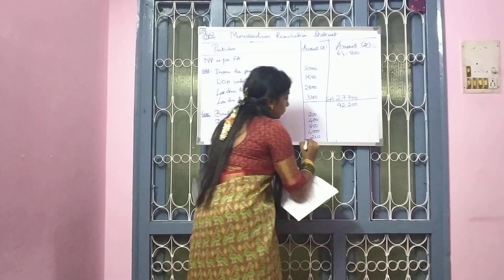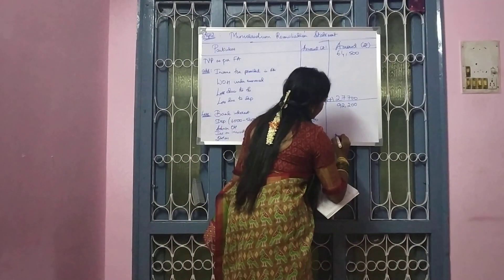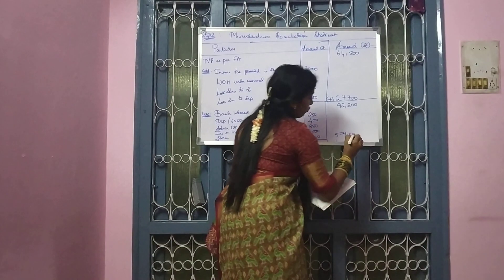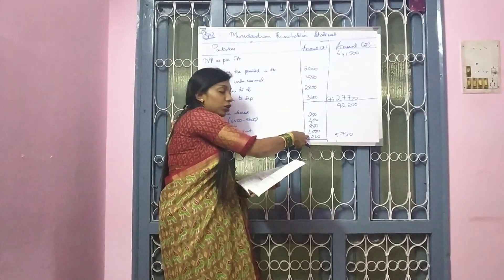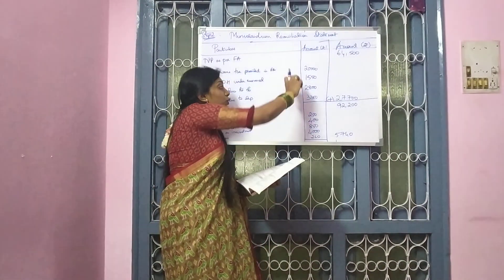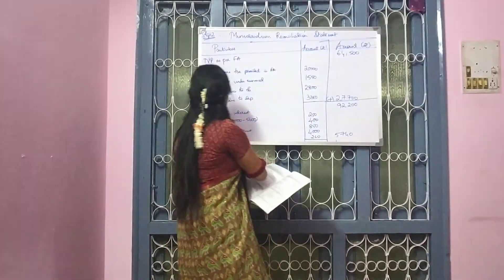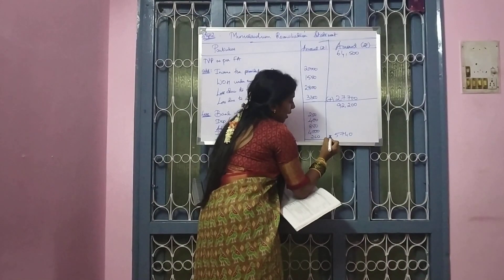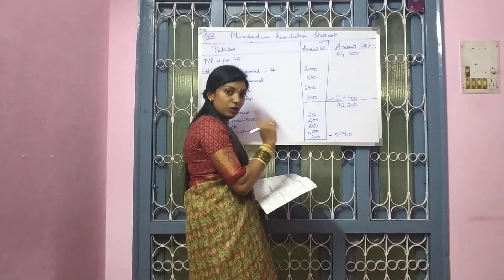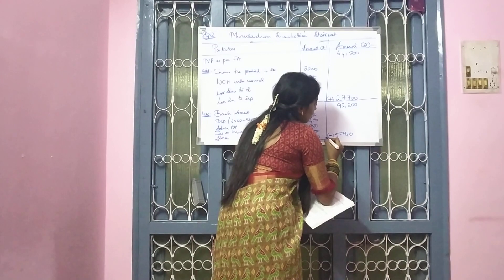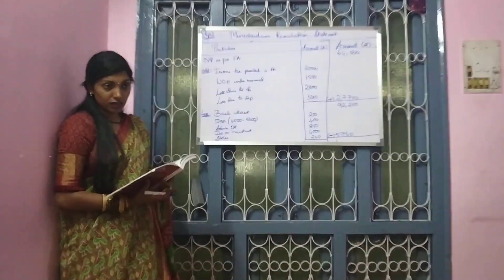And therefore, what would be the total? The total would be 5,740. I have totaled all these four transactions. So if I am doing less, the operation is minus. Add will be plus, less will be minus. So this will be your end result.